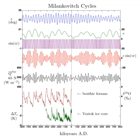Apsidal precession shortens this period to 23,000 years on average, varying between 20,800 and 29,000 years.